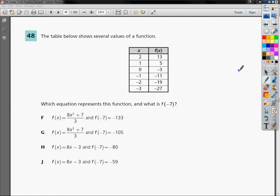The table below shows several values of a function. So you'll see that the left side of the little table has x, and the other side says f(x), which means function of x. Which equation represents the function, and what is the function when x is negative 7? That's what that f(-7) thing is.